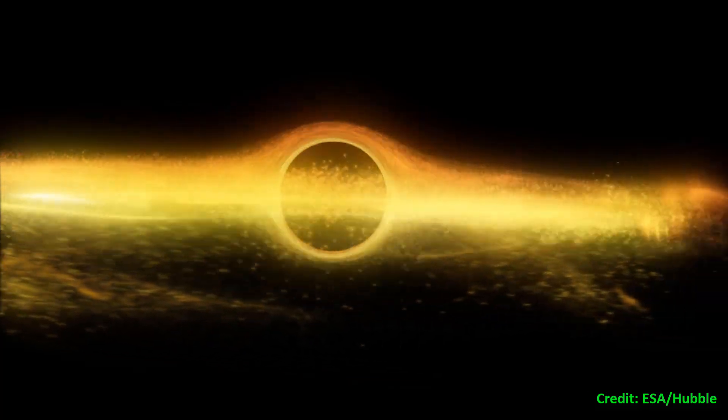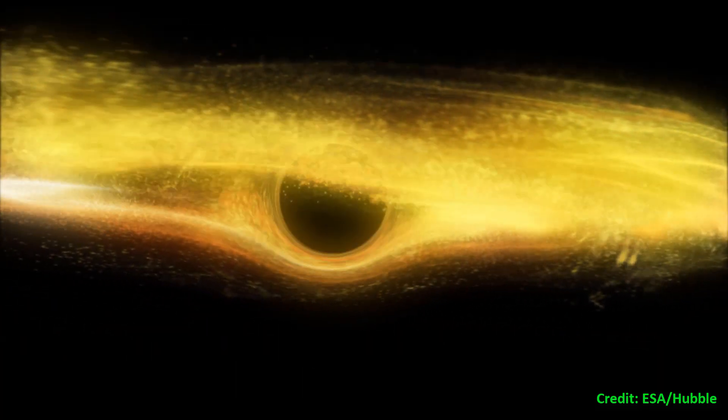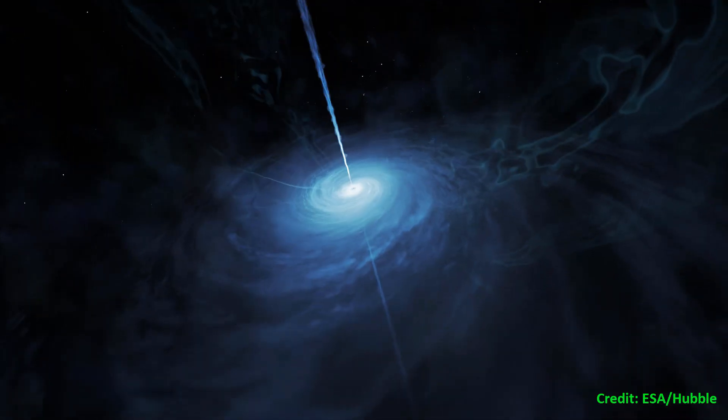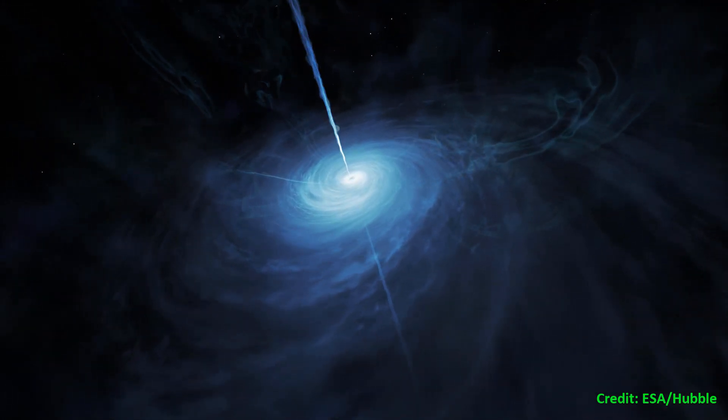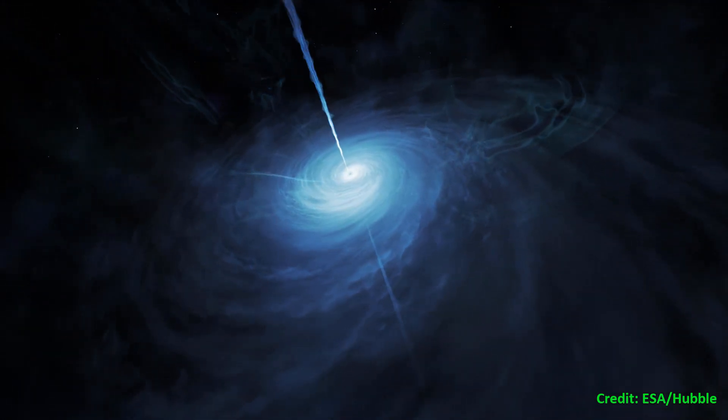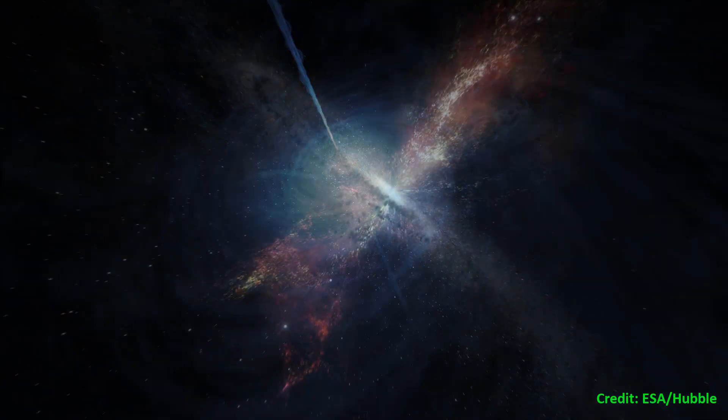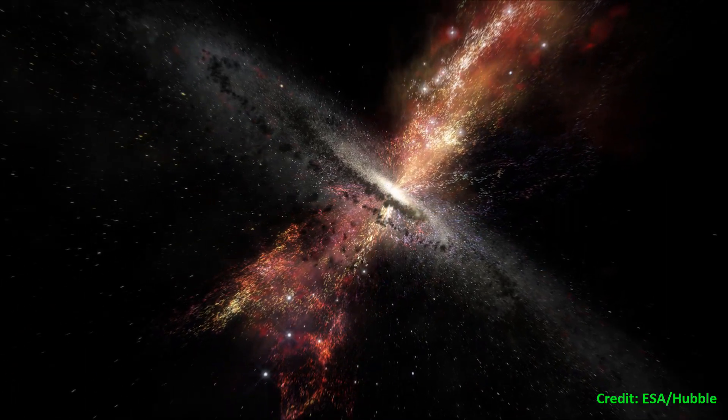Hubble found that the stars there moved in tight orbits at enormous velocities. This strange behavior indicated the presence of a truly colossal gravitational field that could only be produced by a supermassive black hole. Hubble provided the first solid proof of their existence.